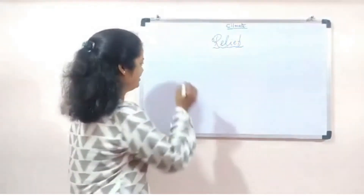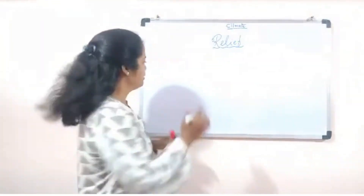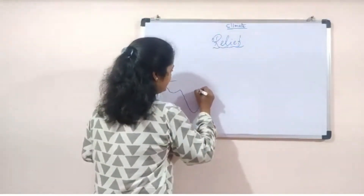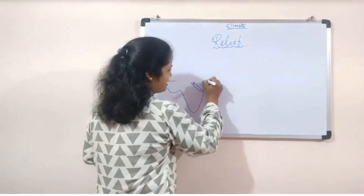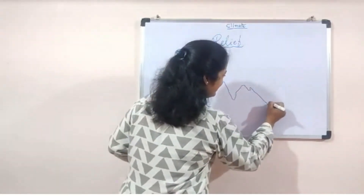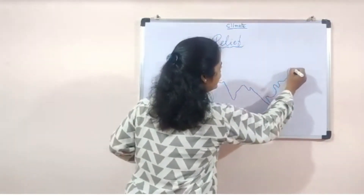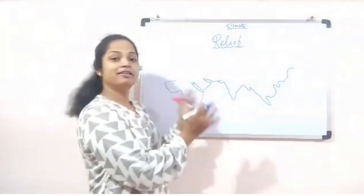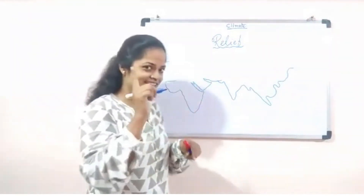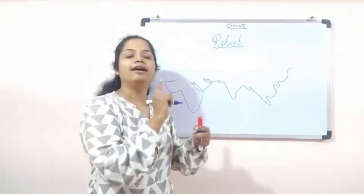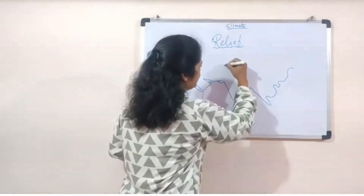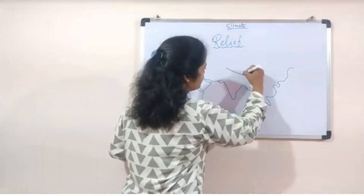For this we need a part of a world map — guess what I am drawing. Yes, you are absolutely right: South Africa, Saudi Arabia, and India. Now we will locate the Himalayan mountain range on this map.